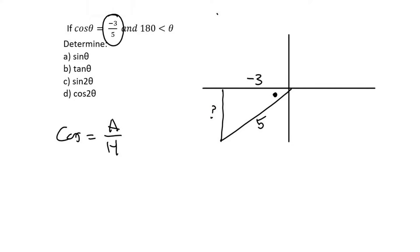If you do that, you would find out that this part over here is going to be 4, but negative 4 because it's going down on the y-axis. So now that we've got our triangle drawn, we can answer the questions.